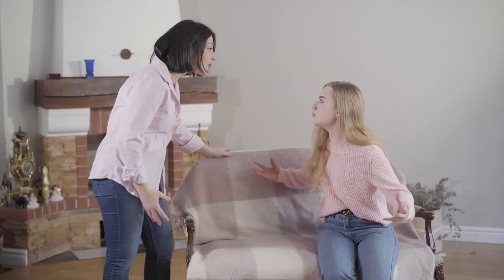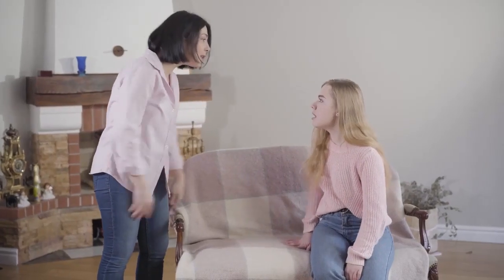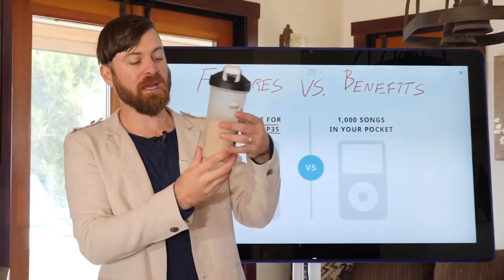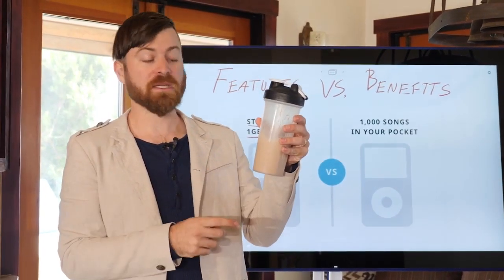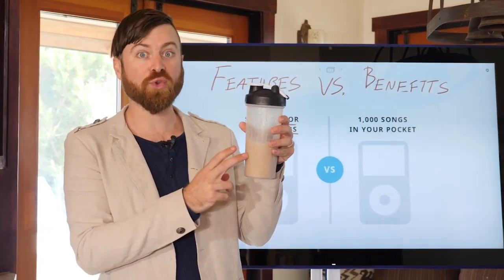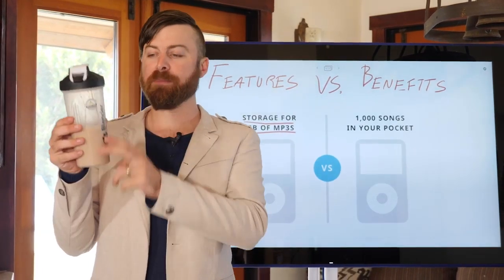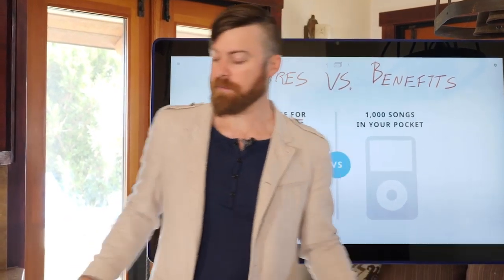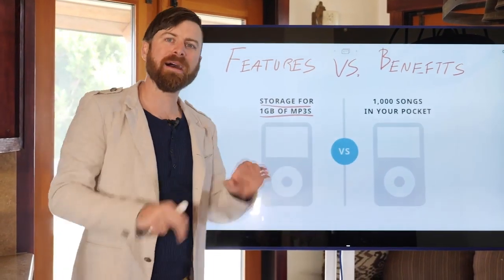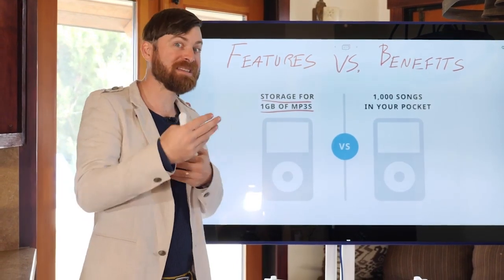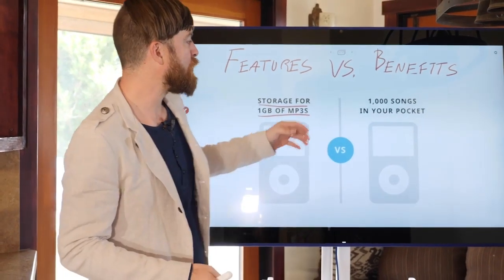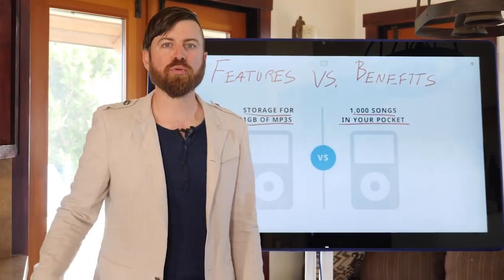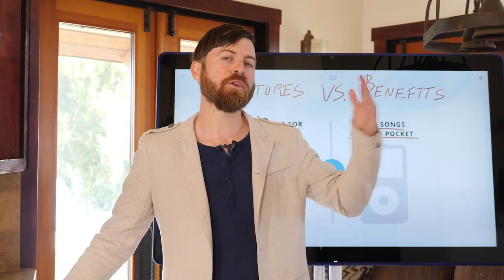A feature is something you can't really argue with — it's a property of something. For instance, with my protein shake, I would say it's got hemp milk, soy protein, and flax oil in it, and it's in a plastic cup. These are all features. Whereas Apple didn't talk about features — they didn't talk about rounded edges or a plexiglass screen. They talked about the benefit: a thousand songs in your pocket. Bring your music anywhere you go.